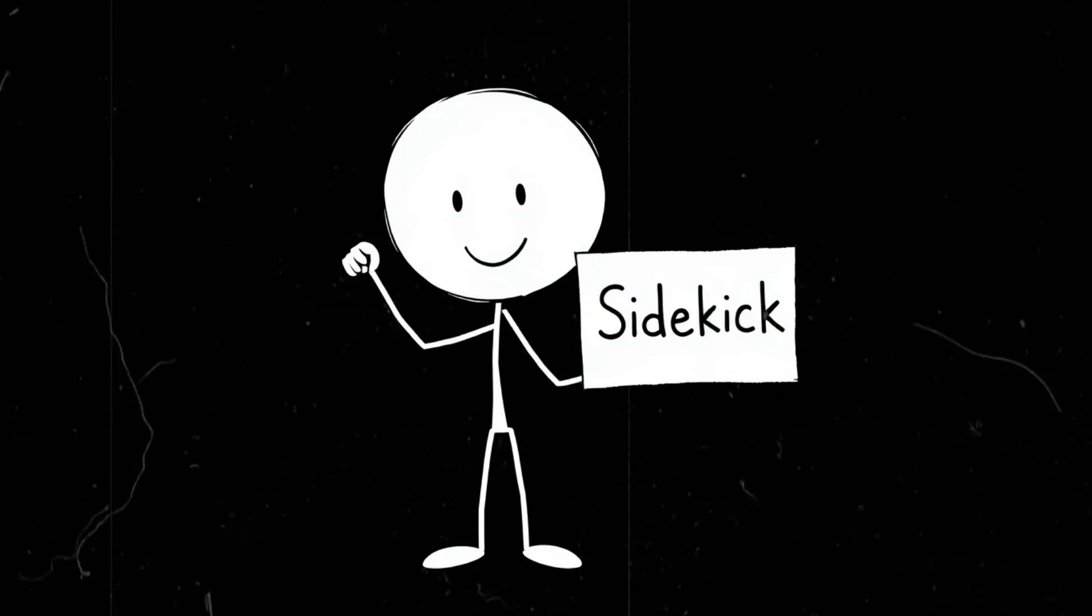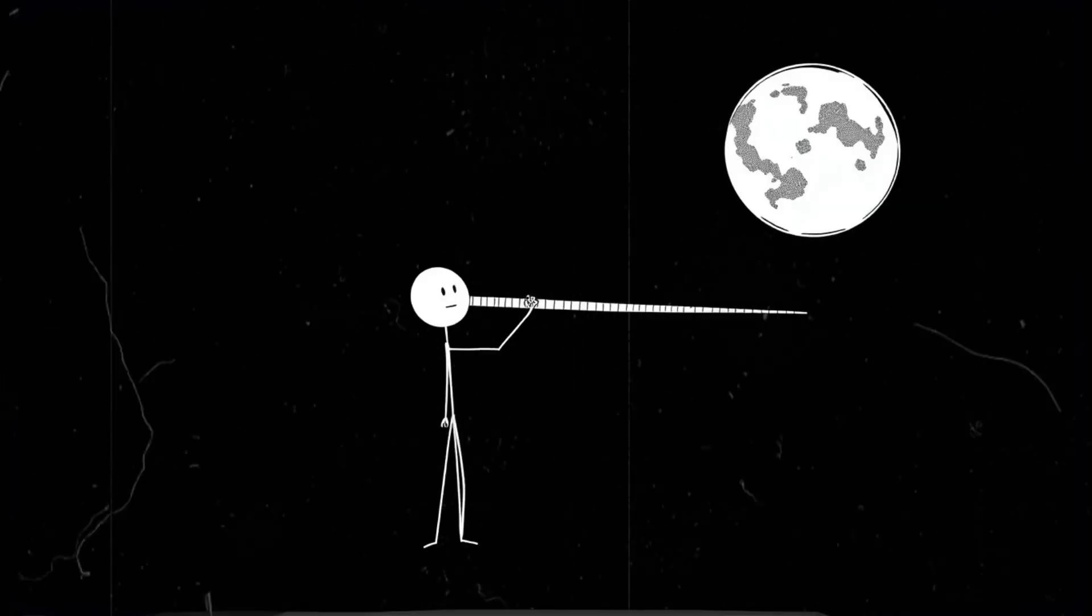The moon, Earth's gravitational sidekick. First, a little background. The moon is currently about 384,000 kilometers, 238,855 miles away from Earth.